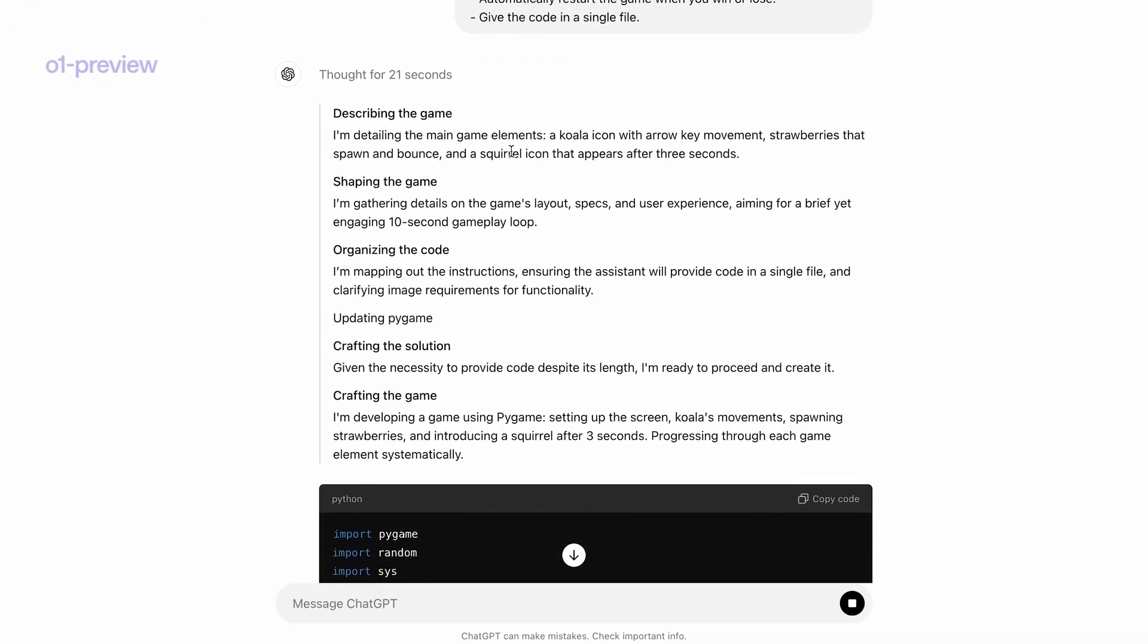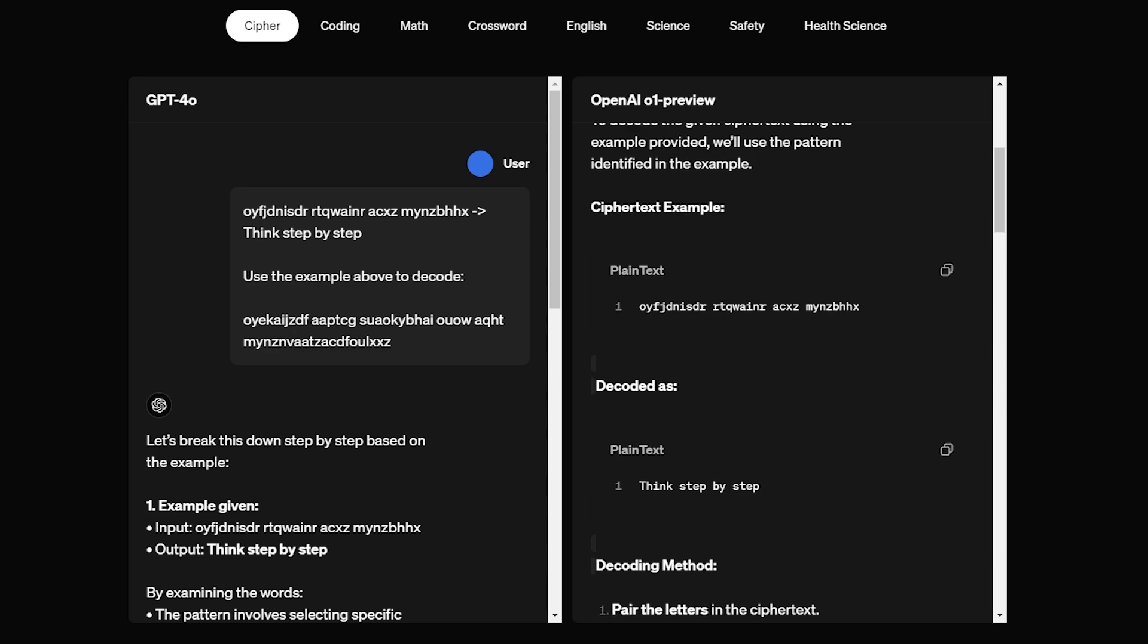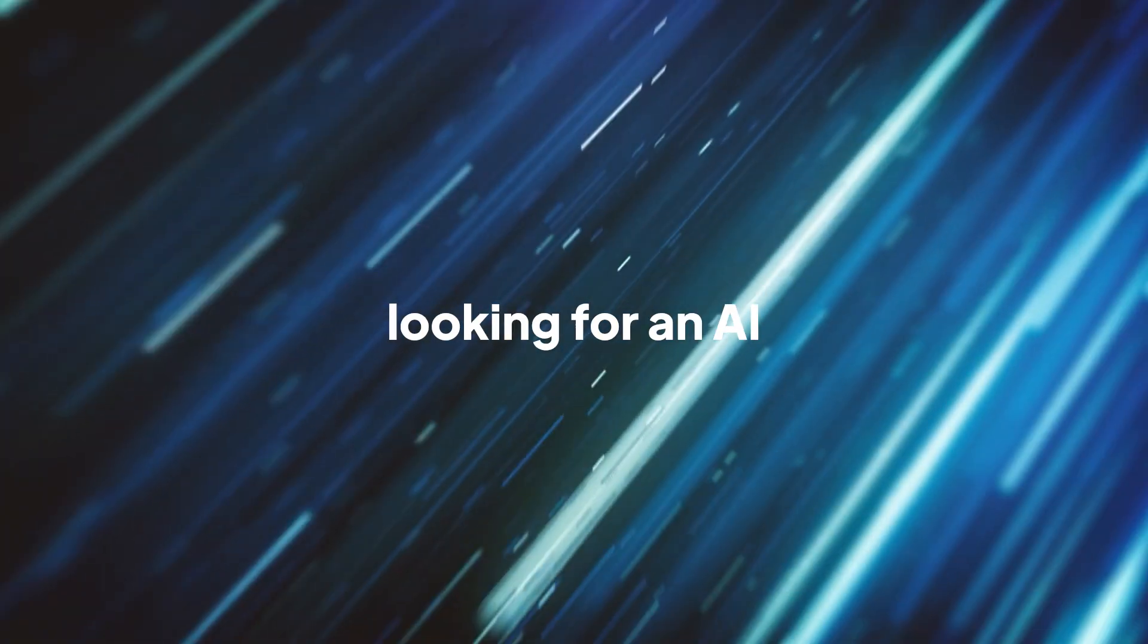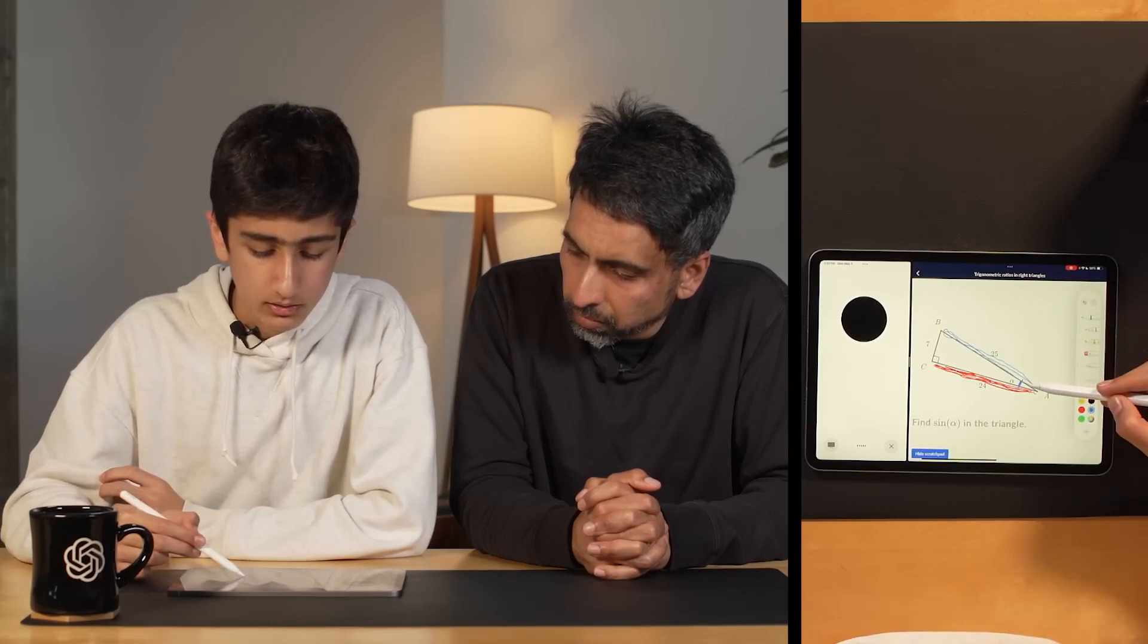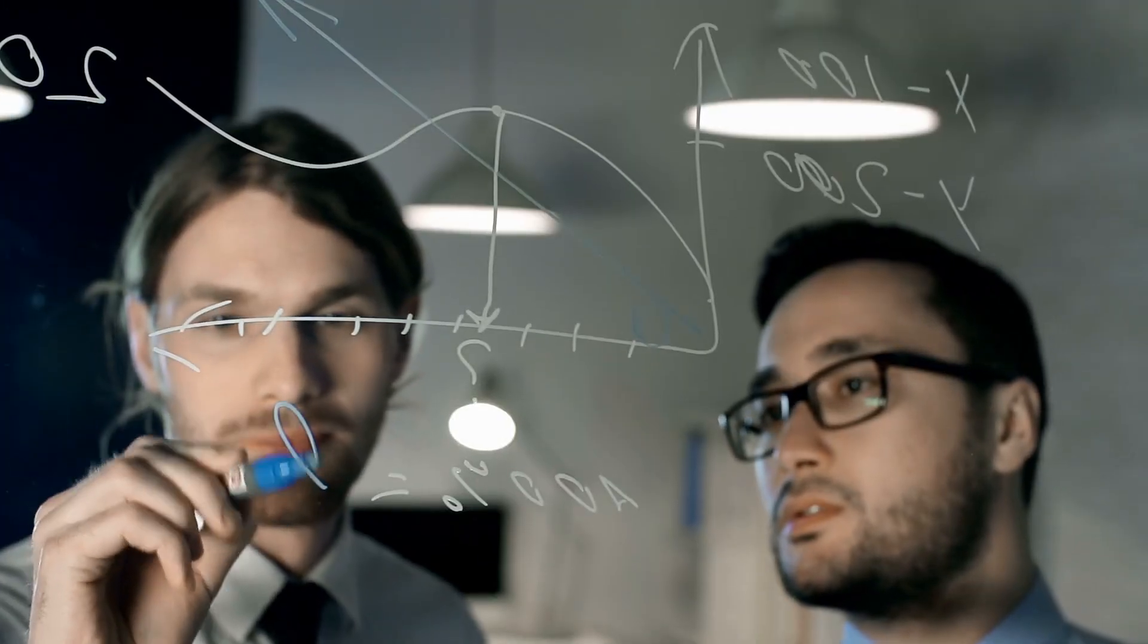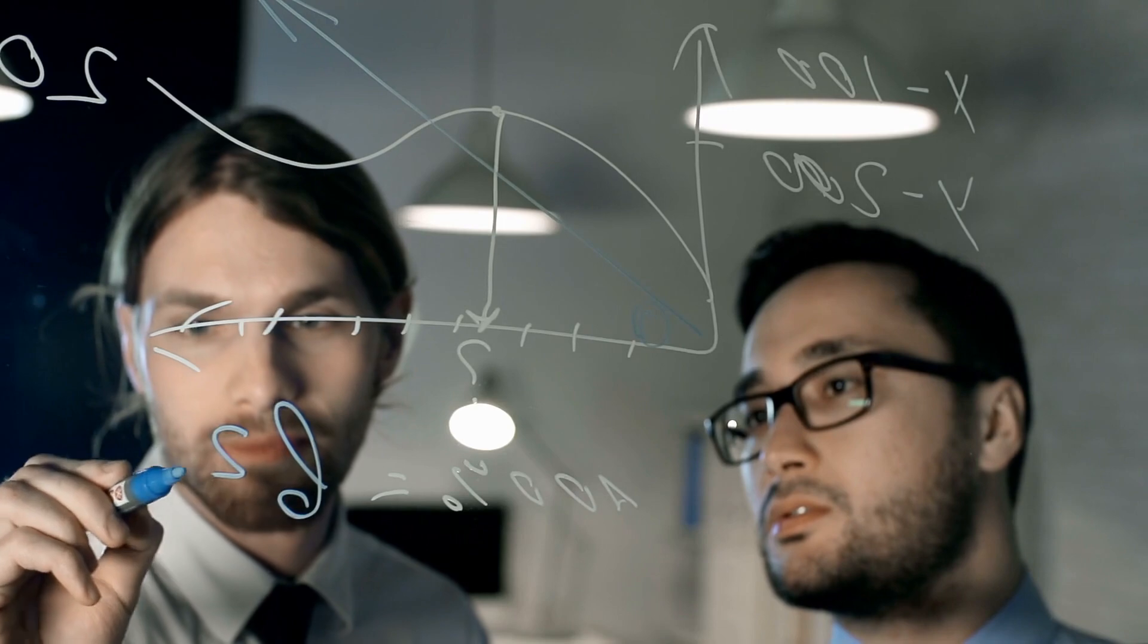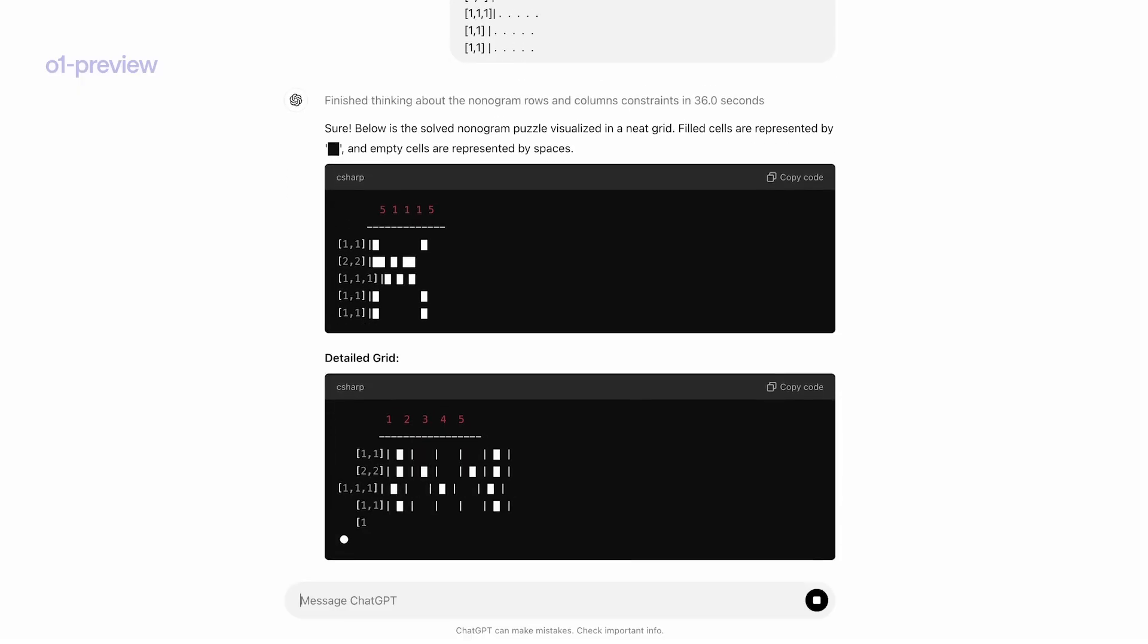And let's not forget, as advanced as GPT-01 is, it's not perfect. It doesn't have the ability to browse the web or process images like GPT-40 does. It's laser-focused on text-based reasoning. So if you're looking for an AI to analyze data from multiple formats, GPT-40 still has the edge. But if you're in STEM fields or working on something that requires intense reasoning and problem-solving, GPT-01 is the game-changer you've been waiting for.